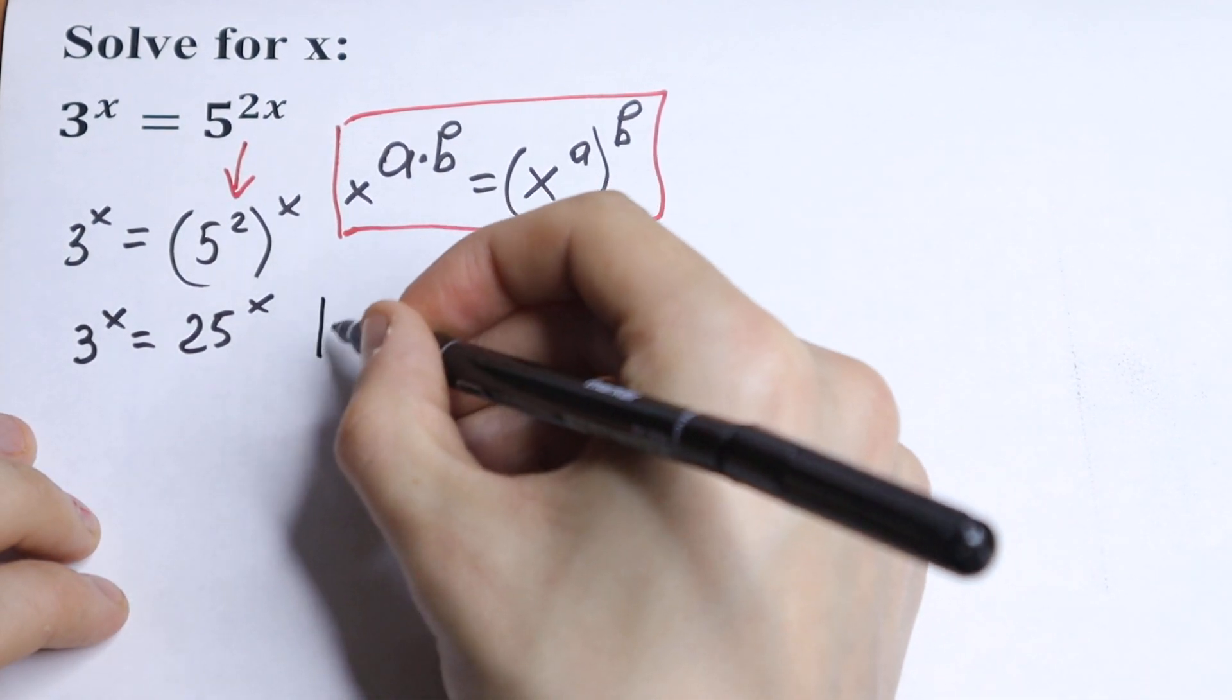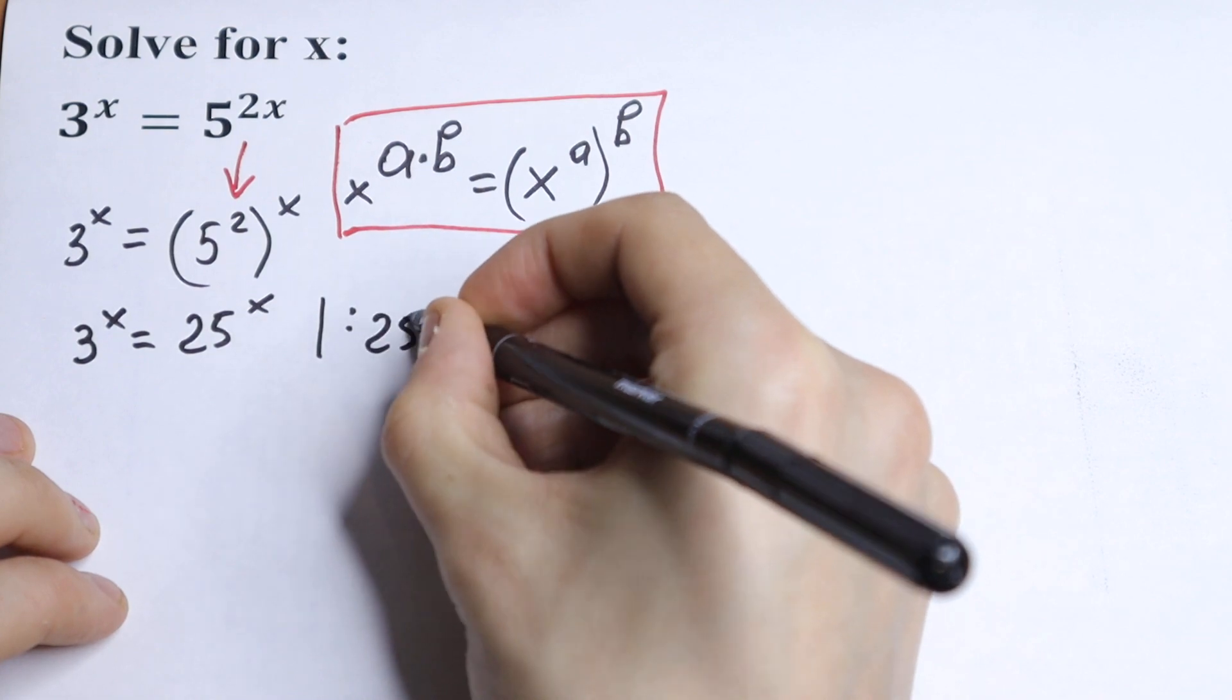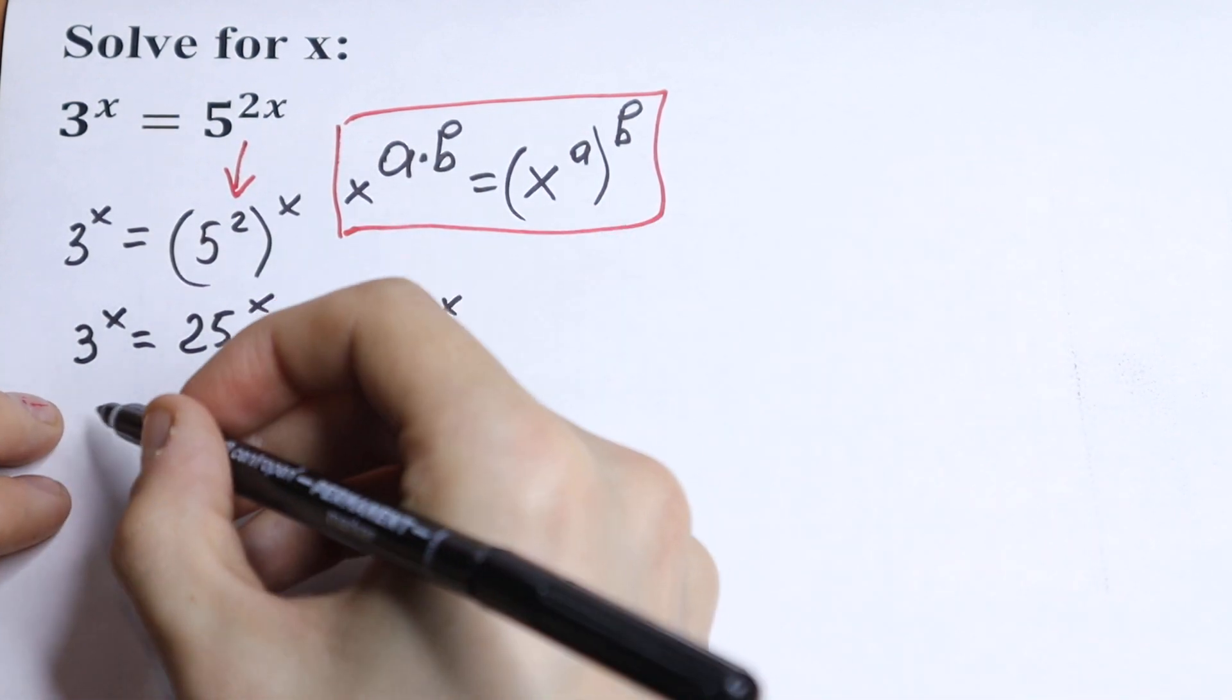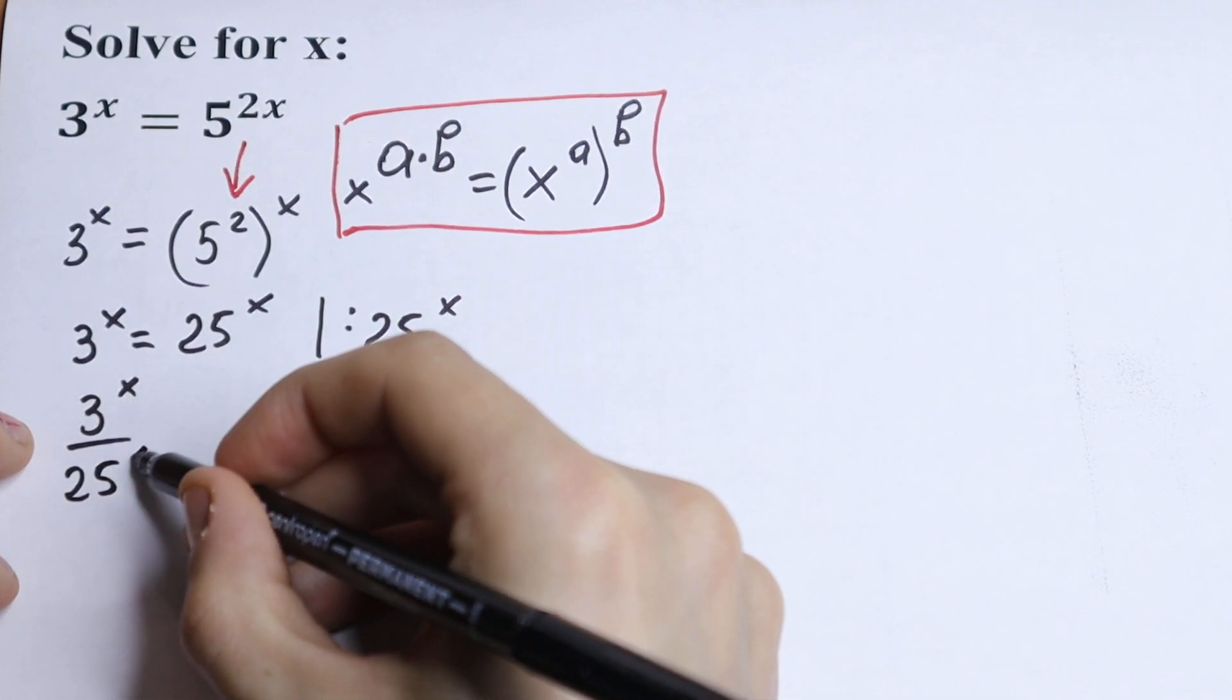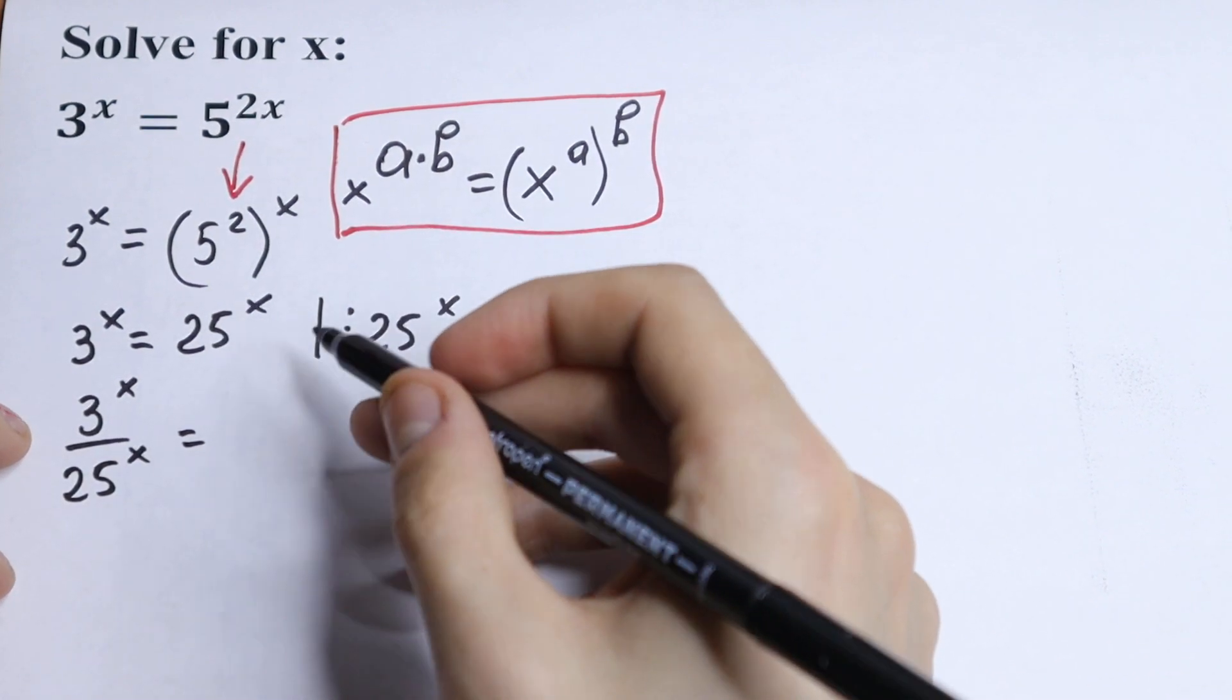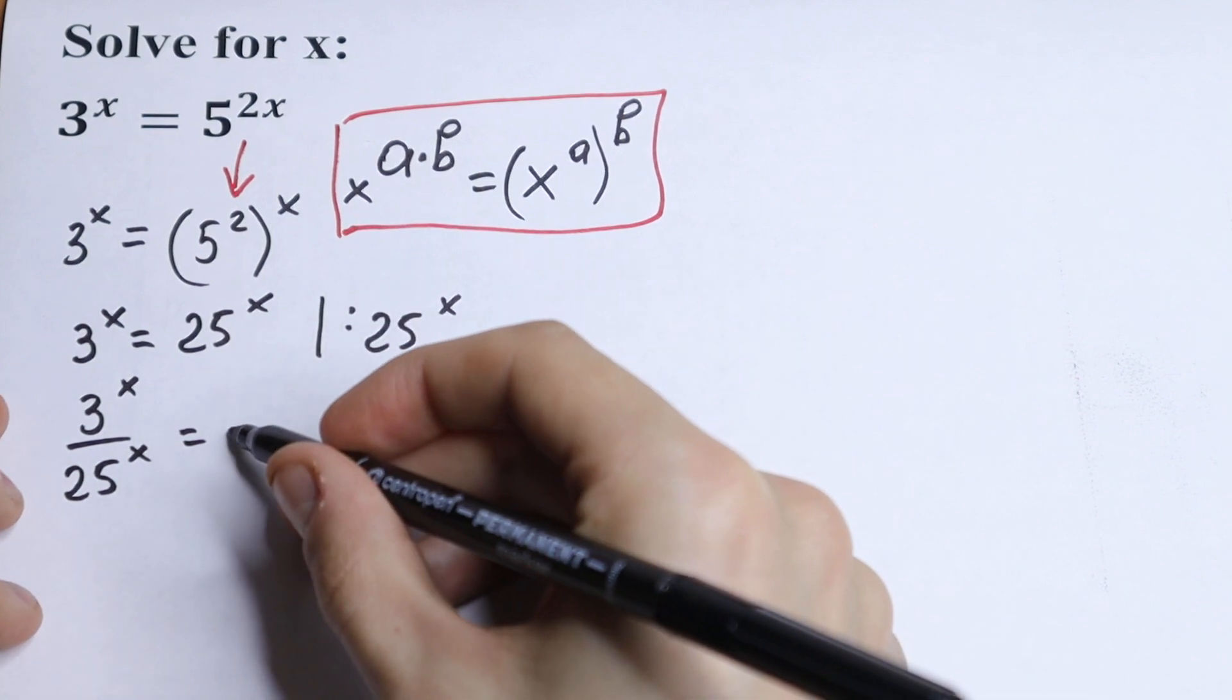In our case let's divide both sides by 25 to the power x. So we will have 3 to the power x over 25 to the power x, which will equal 1.